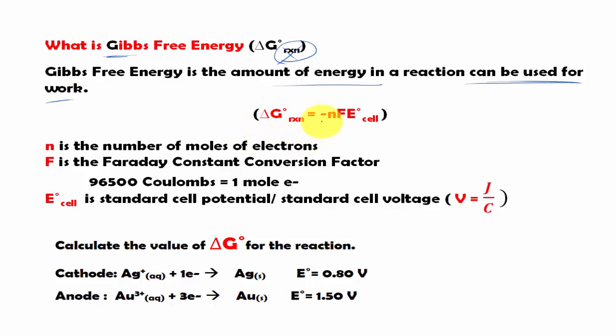And ΔG is equal to -nFE°_cell. First of all, n is the number of moles of electrons in the equation or the reaction.